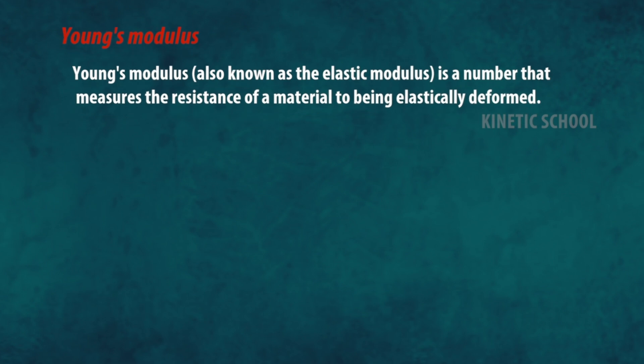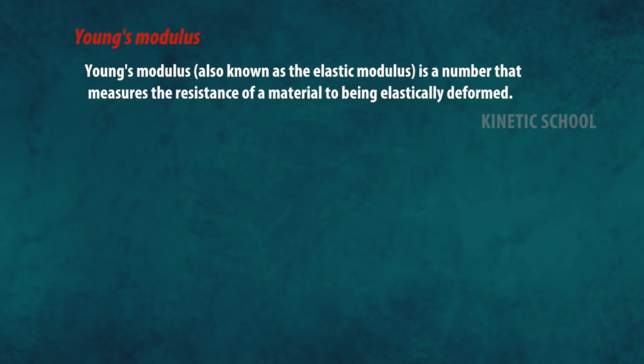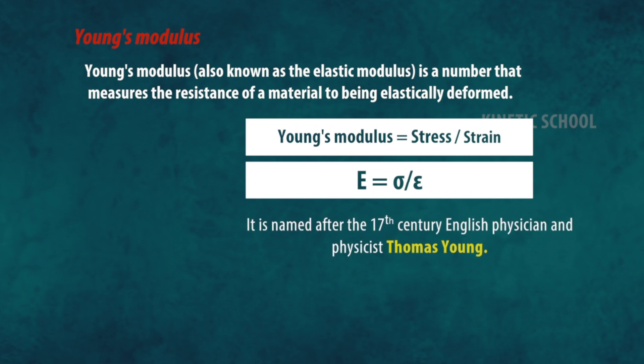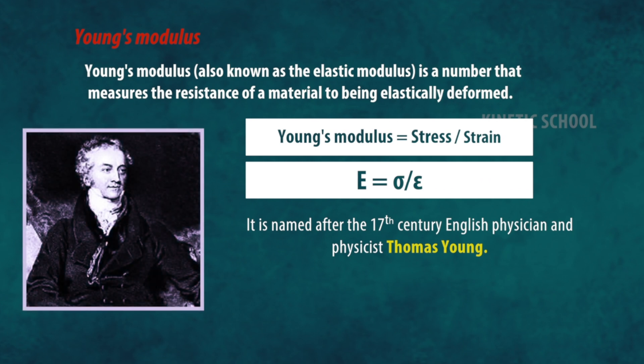Young's modulus, also known as the elastic modulus, is a number that measures the resistance of a material to being elastically deformed. Young's modulus equals stress divided by strain, or E equals sigma divided by epsilon. It is named after the 17th century English physician and physicist Thomas Young. The stiffer a material, the higher its Young's modulus.